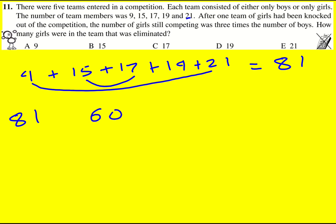Now we're told at this point that the number of girls still competing was three times the number of boys. So essentially that means that the boys would be a quarter of the amount, and the girls then be three quarters. This is in the ratio three to one essentially,